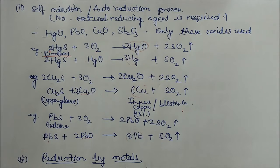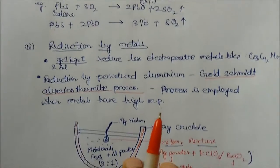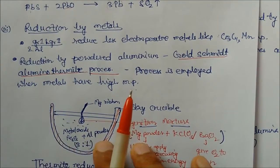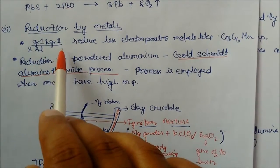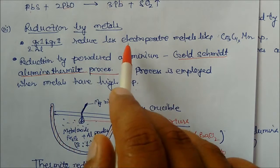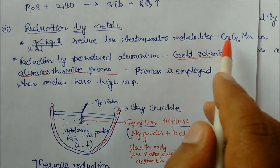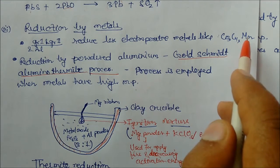After this self-reduction method, we will see another methodology called reduction by metal. In this method, Group 1, Group 2 and aluminium, they reduce less electropositive metals like chromium, copper, manganese.